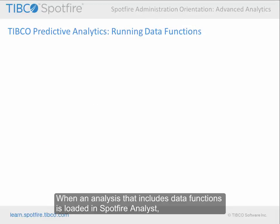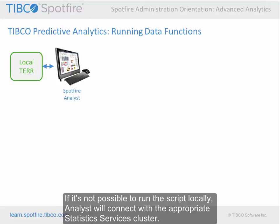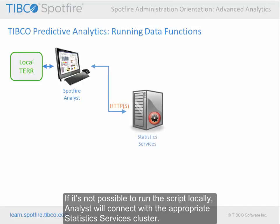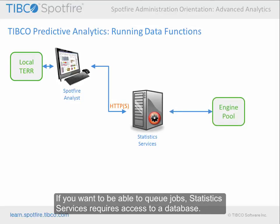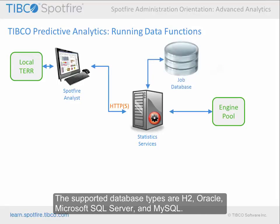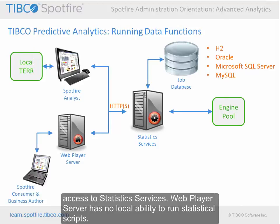When an analysis that includes data functions is loaded in Spotfire Analyst, the functions will be run in Analyst's local TAIR environment, if possible. If it's not possible to run the script locally, Analyst will connect with the appropriate Statistics Services cluster. Statistics Services will run the job using the next available engine from the engine pool. If you want to be able to queue jobs, Statistics Services requires access to a database. The supported database types are H2, Oracle, Microsoft SQL Server, and MySQL. For data functions to run in the browser-based and mobile clients, WebPlayer Server must have access to Statistics Services, as WebPlayer Server has no local ability to run statistical scripts.